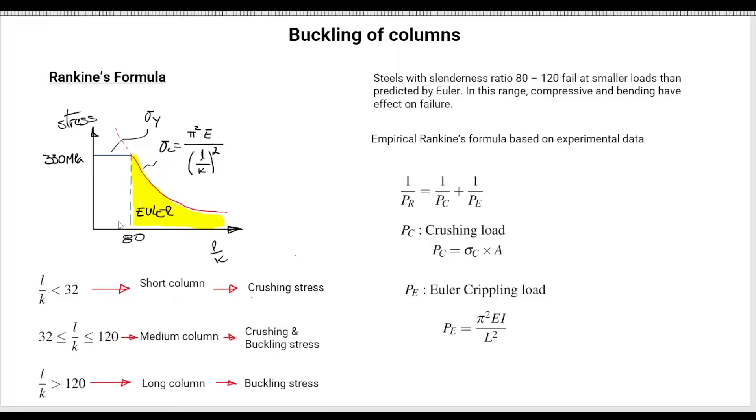This is interesting because when we discussed the point where the slenderness was at the point where the yield strength touched or was the same as the result from the Euler formula, which is this hyperbola here, that created a division, a separation between types of columns. In textbooks, you're not going to have medium columns. You're going to have either short columns or long columns.